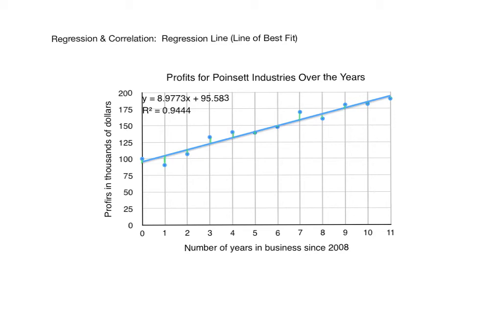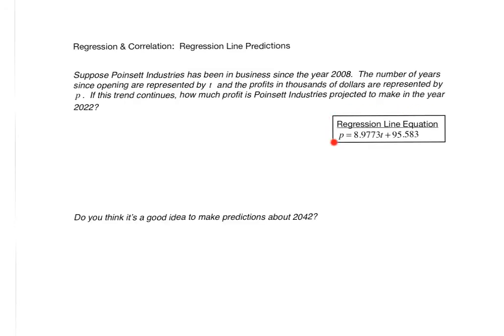At the end of the next screencast on correlation, you will see all the Excel commands to produce the scatter plot, the equation of the line, and so on. So Excel gave us this regression line. We now want to know: if this trend continues, how much profit is Points at Industries projected to make in the year 2022? The year 2022 corresponds with a T value of 14, since 2022 is 14 years after 2008. So we simply need to plug 14 in for T in this equation and do our arithmetic.